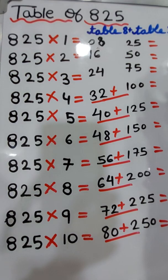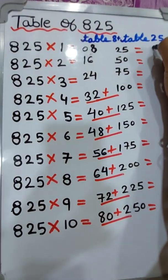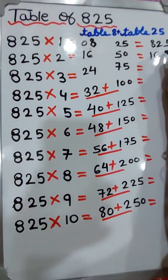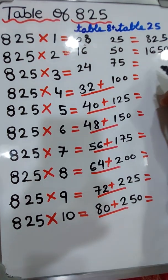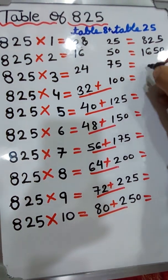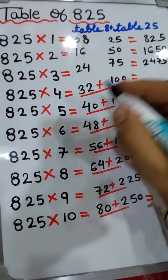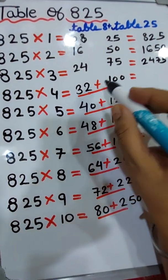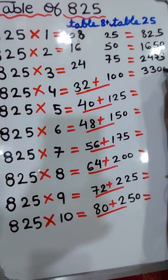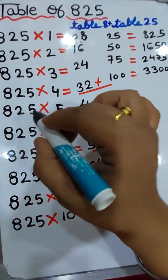825 ones are 825. 825 twos are one thousand six hundred and fifty. 825 threes are two thousand four hundred and seventy-five.